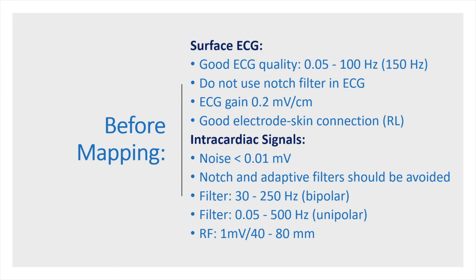After having the ECG, intracardiac signals are very important. The noise in our EP lab should be below 0.01 mV, and all notch and adaptive filters should be avoided, especially in mapping and ablation of atrial tachycardia. High-pass and low-pass filters for bipolar signals should be set to 30 and 250 Hz respectively. Lowering the low-pass filter below 250 Hz causes loss of signals such as pulmonary vein potentials and His-Purkinje system potentials.